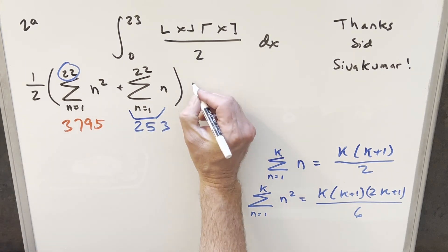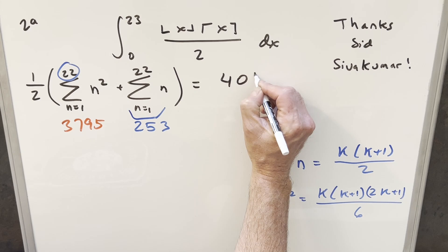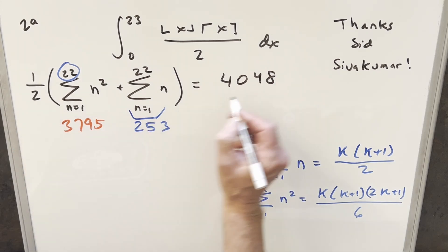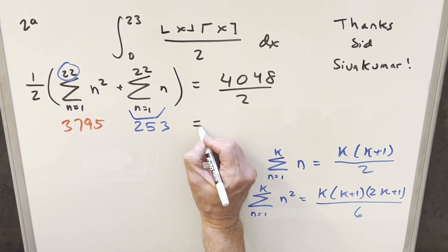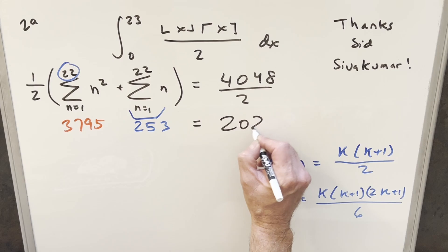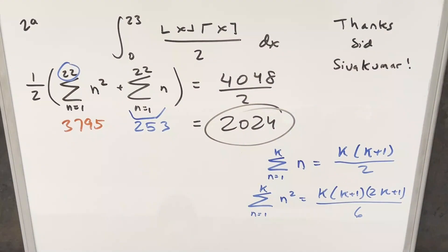But adding 253 to 3795, we get 4048. Divide here by 2. And for my final solution, we just have 2024. Okay, there you have it. Really good problem. Thanks again to Sid for the suggestion for this one. Thanks everyone for watching. Have a good day.